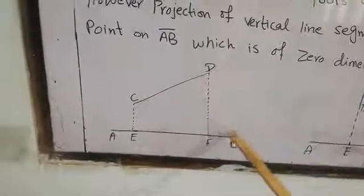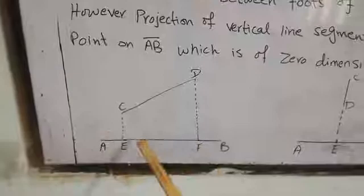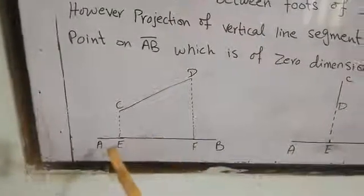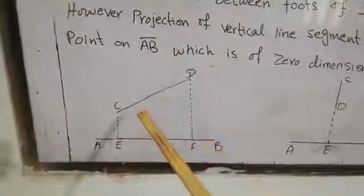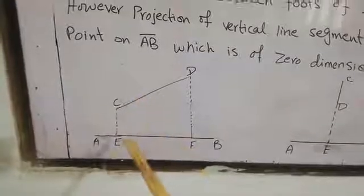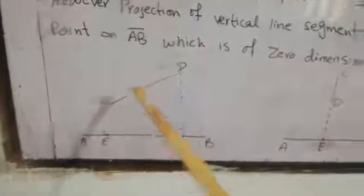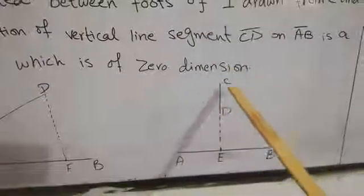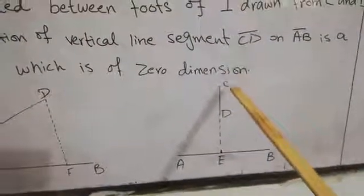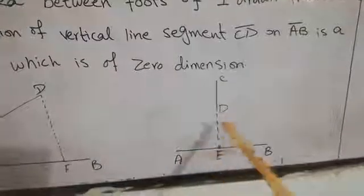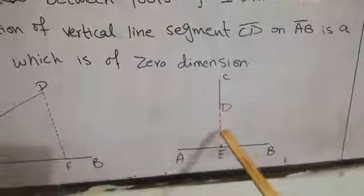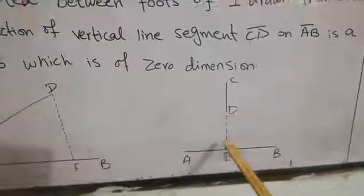DF is another perpendicular to line segment AB. So we can say in the case of a horizontal line segment CD, EF is the projection of CD on AB. Now in the case of a vertical line segment CD — where we have a vertical line segment CD and we are finding the projection of CD on AB — if we draw the perpendicular, you can see that this becomes a zero dimension case.